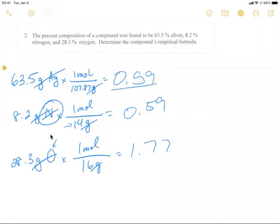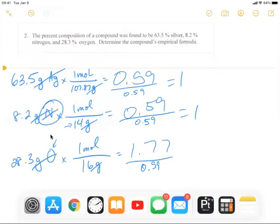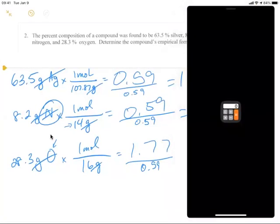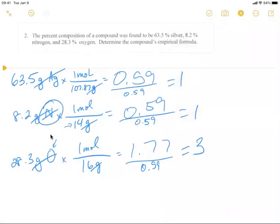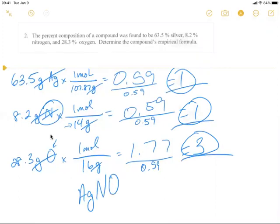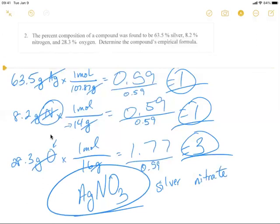And then finally, you divide by the smallest number, which is 0.59. So obviously this is one and this is one. 1.77 divided by 0.59 and you get three. Yeah. See, now you get a nice whole number. Three. So again, these final numbers here represent the subscripts. So it's Ag is one, N is one, and O is three. And guess what? You should recognize that as silver nitrate. All right. Tadah.